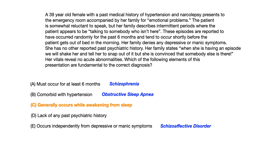Choice D — lack of any past psychiatric history — doesn't really point you in the direction of anything specific; it's just a distractor. Choice E — occurs independently from depressive or manic symptoms — is hinting heavily at schizoaffective disorder. The criteria for schizoaffective disorder requires psychotic symptoms lasting at least two weeks without concurrent depression or mania. To pick that diagnosis, I would have needed to more clearly define other psychotic symptoms. The simple fact that the patient has narcolepsy and hallucinations only occurring while awakening from sleep points you toward hypnopompic hallucinations, not schizoaffective disorder.